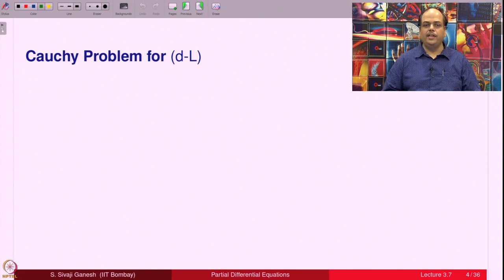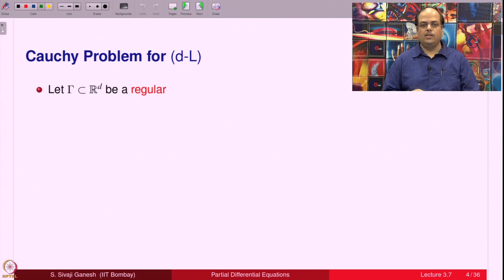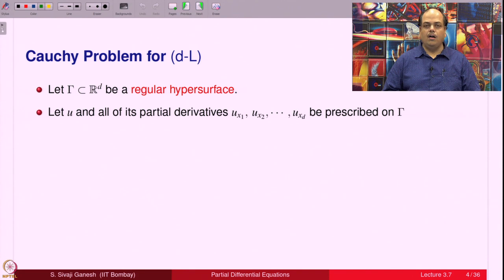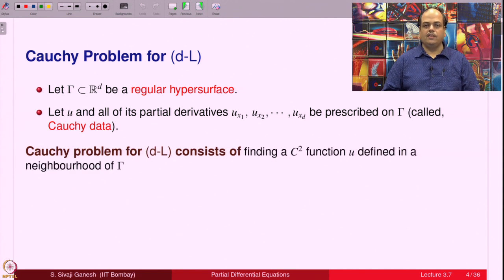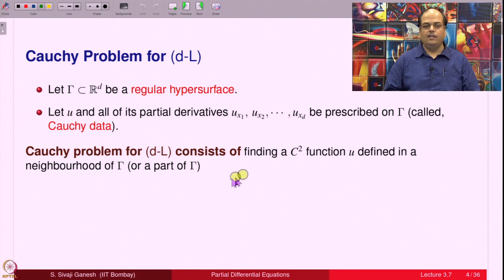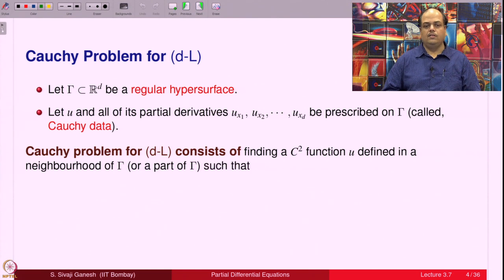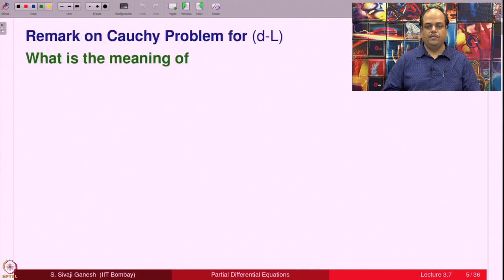The Cauchy problem for the D-dimensional linear equation (DL): take gamma, a subset of R^d which is a regular hypersurface. Let u and all its partial derivatives u_{x_1}, u_{x_2}, ..., u_{x_d} be prescribed on gamma - this is called Cauchy data. The Cauchy problem for DL consists of finding a C² function in a neighborhood of gamma such that u solves DL and the given Cauchy data is satisfied.